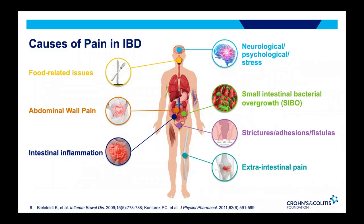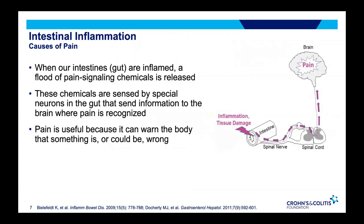Aside from abdominal pain, there are also extra-intestinal and extra-abdominal causes of pain that are very important in inflammatory bowel disease. When we talk about intestinal inflammation and its relationship to pain, this is one of the most frequent causes of symptoms in IBD. During periods of flares or active disease, specialized chemicals are released in the gut and elsewhere, sensed by neurons that relay information up through the spinal cord into the brain, where it's perceived as pain.